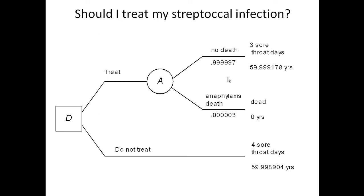Here's something from the medical domain: should I treat my streptococcal infection? You either treat it or you don't. If you don't treat it, we treat that as a certain outcome — you will have a sore throat for four days, and you have this much expected quality adjusted life remaining. If you do treat it, there's uncertainty. The treatment has a very small chance of causing anaphylaxis death — in this case, 0.00003. If you have anaphylaxis death, then you end up dead with zero years left.